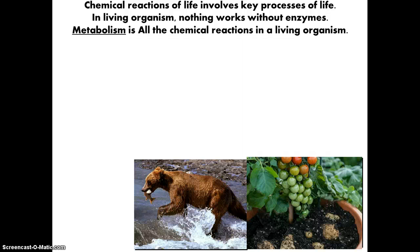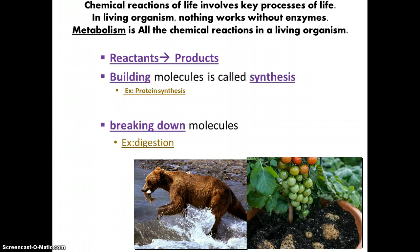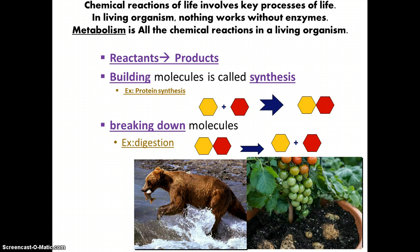Now chemical reactions of life involve key processes of life. And all these processes, all these chemical reactions, is what we refer to as metabolism. So metabolism is all the chemical reactions in the organism. And all the chemical reactions have something called reactants. And when they react together, they produce a product. So in life, we have molecules that are being built, or we say synthesis, for example, like protein synthesis. So you have reactants, and you get a product. Or you have reactions that break down molecules, for example, like in digestion. So you break down, say, a starch molecule into separate sugar molecules.